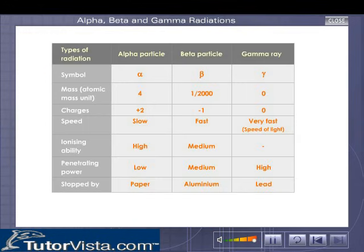Alpha rays are made of positively charged particles with a net charge of plus 2. They have high ionizing power. The beta rays are made of negatively charged particles with a charge equivalent to that of an electron. They have less ionizing power.